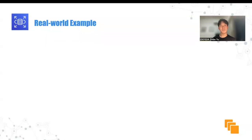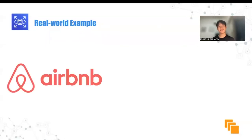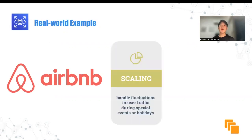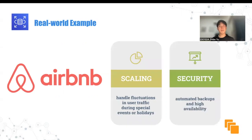So now let's see how some industry leaders benefit from Amazon RDS. Airbnb is a global online marketplace for short and long-term home stays, with millions of users and extensive data to manage. Airbnb needs a powerful database management system so hosts and guests can both have a seamless experience. Amazon RDS allows Airbnb to handle a massive volume of home stay listings, bookings, and user profiles with ease. The ability to scale resources on demand ensures that Airbnb's database can handle fluctuations in user traffic during special events or holidays. Additionally, automated backups and high availability features give Airbnb peace of mind knowing their data is secure and protected.